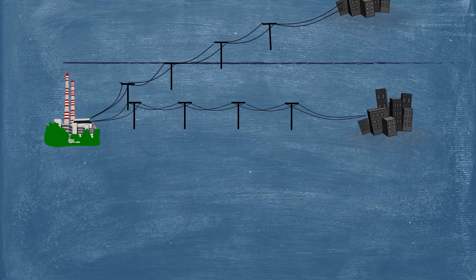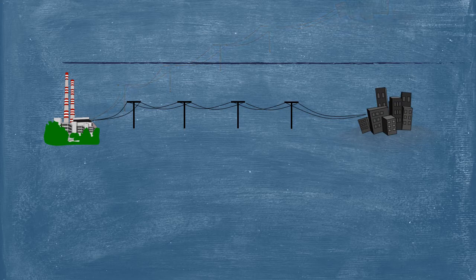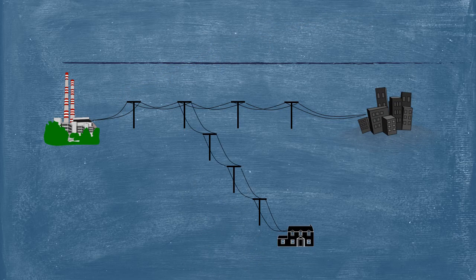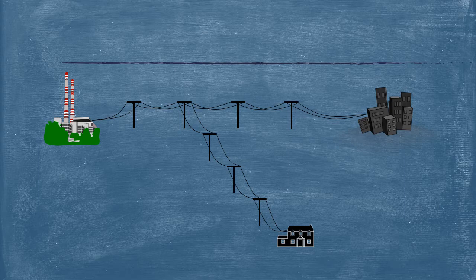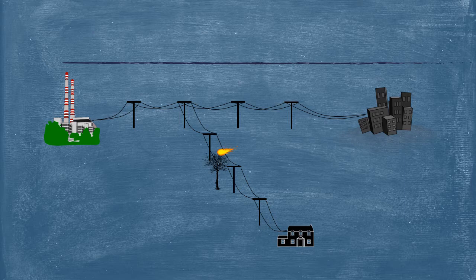If we then move on to if we now simplify the system and consider just the generator and the city, as well as going back to our original scenario, our little distribution line coming down to feed our house, which is then in contact with a tree, and we have the resultant fire. So what happens there?